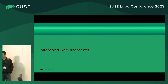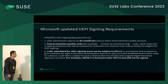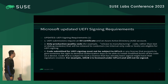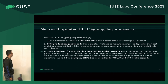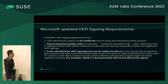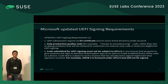Now, Microsoft requirements. Because we need Microsoft to sign, they have a document with many rules. First, we need to use an EV certificate. They only sign production-quality code — we cannot send development code to them for signing. And the code submitted for UEFI signing must not be subject to GPL v3. That's why they don't want to sign GRUB2, which is why SHIM was created.